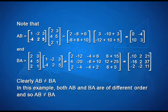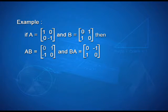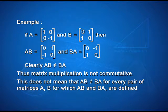In this example, AB and BA are of different orders, so AB is not equal to BA. One may think that AB and BA could be equal if they were of the same order, but that is not so. Here is an example: if A equals [1, 0; 0, minus 1] and B equals [0, 1; 1, 0], then product AB is [0, 1; minus 1, 0] and product BA is [0, minus 1; 1, 0]. Clearly AB is not equal to BA. Thus, matrix multiplication is not commutative.